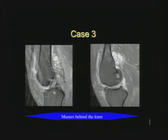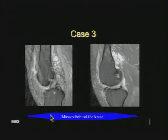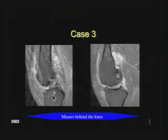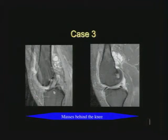In our third case, we're looking at the ACL. We might think this is a tear, but there are clues it isn't. There are small masses behind the knee and what looks like a cyst near the ACL's tibial attachment. This is mucoid degeneration of the ACL — it expands the ACL and makes it look bright on T2 weighting.